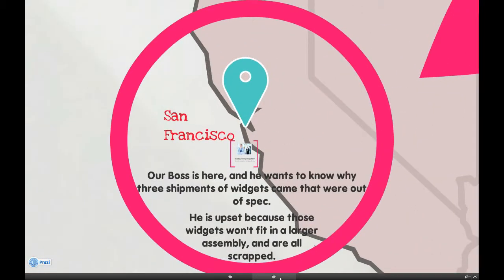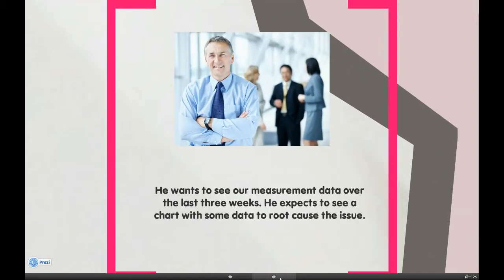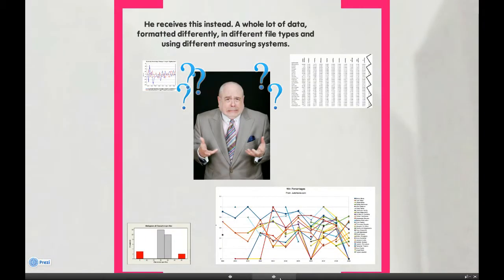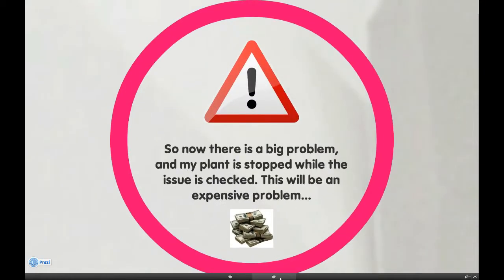Over here in San Francisco is our boss. He wants to know why three shipments of widgets came in that were out of spec. He's upset because those widgets won't fit into a larger assembly, and they all have to be scrapped. He wants to see our measurement data over the last three weeks and expects to see a chart to root cause the issue. But he receives a whole lot of data formatted differently, with different file types using different measuring systems — very difficult to compare and root cause. So now there's a big problem, and the plant has to be stopped while the issue is checked out.